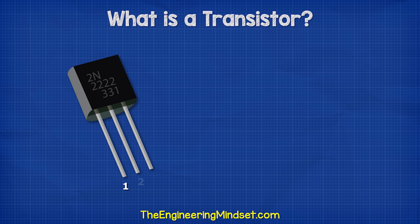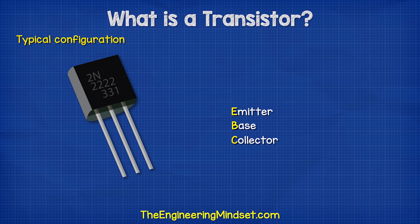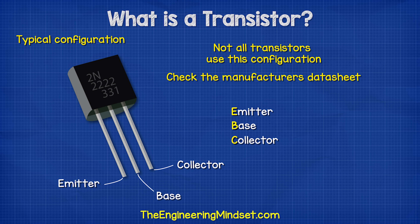With a transistor, we have three pins labeled E, B, and C. This stands for the emitter, the base, and the collector. Typically, with these resin body type transistors with a flat edge, the left pin is the emitter, the middle is the base, and the right side is the collector.